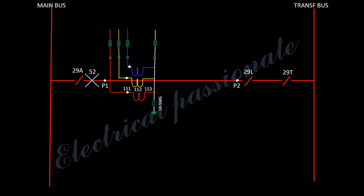Ferrule wire code numbers D11, D31, D51, and D71 are terminated at terminal block TB 1.1, 1.2, 1.3, and 1.4.